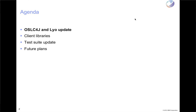Please feel free to jump in with questions at any time. I like to keep this conversational, but I do have some slides that I'm going to go through and also jump over and try to demo a couple of things as we go along. The first part is going to be to talk about OSLC4J and just a general update on Leo.